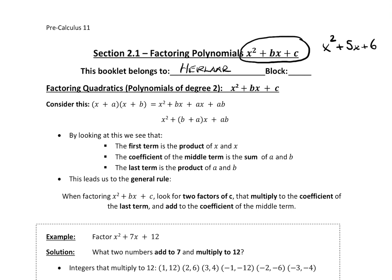These are called quadratics, which are polynomials of degree 2. Remember, the degree is the exponent on the x. So if you see anything that looks like x squared plus bx plus c, that's a quadratic. This is a basic quadratic — there's nothing in front of the x squared, no number there. So how do we get this?